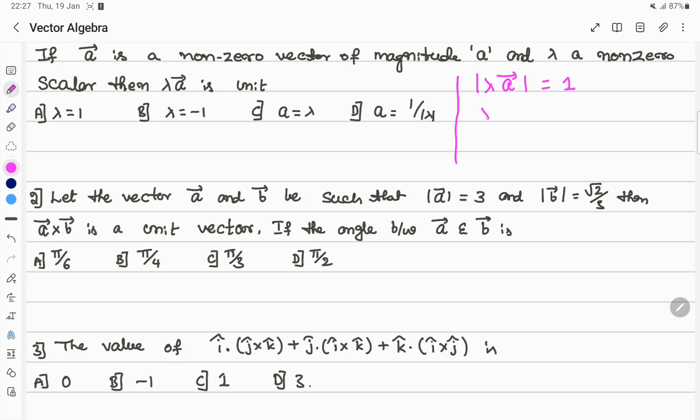Then, magnitude of lambda a equals magnitude of vector a which equals 1. Therefore, vector a should equal 1 by lambda. So option d is the answer for this question.